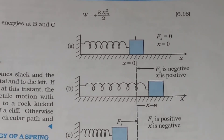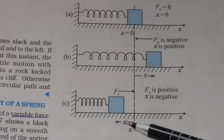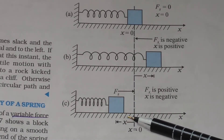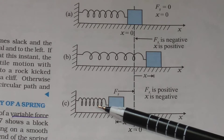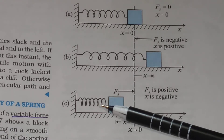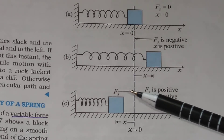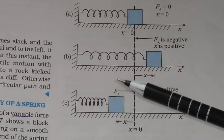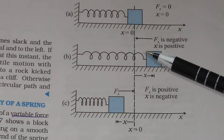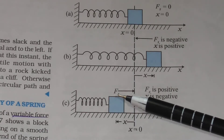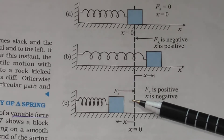When x is less than 0, the displacement is negative and the spring is compressed. In this case, the spring force will be positive — that is, fs is greater than 0.